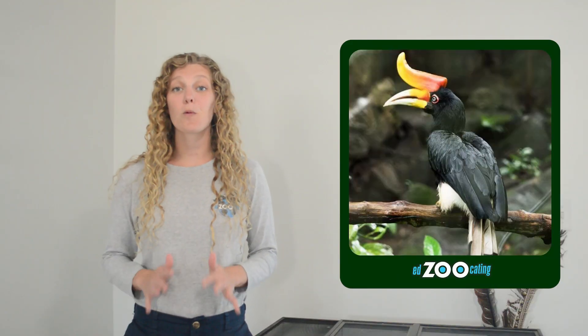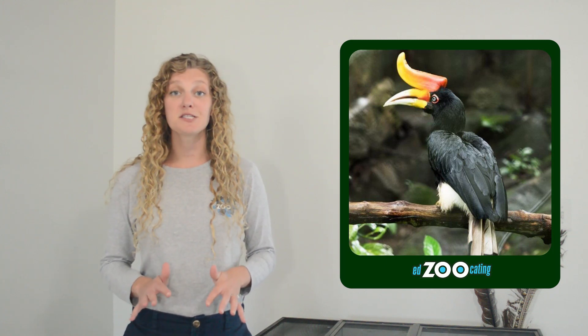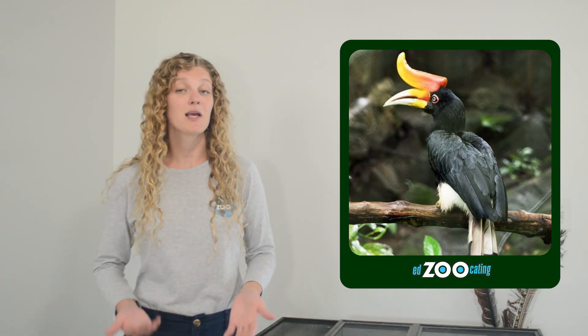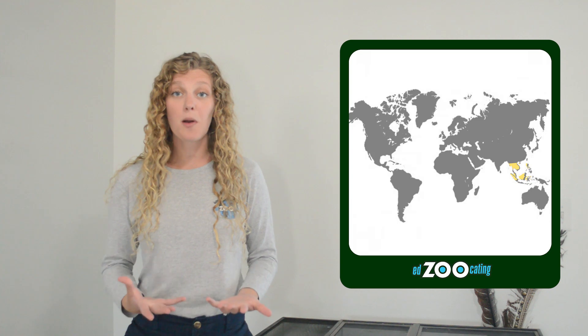Rhinoceros hornbills are one of about 55 different species of hornbills. We can find hornbills in Africa and in Asia, but rhinoceros hornbills are specifically found in the southeastern part of Asia and on a couple surrounding islands such as Borneo, Sumatra, and Java. We're typically finding rhinoceros hornbills in tropical forests, sometimes on the side of mountains. Rhinoceros hornbills are pretty much always found in old growth forests where the trees are gigantic and we're going to come back to why that is in just a little bit.